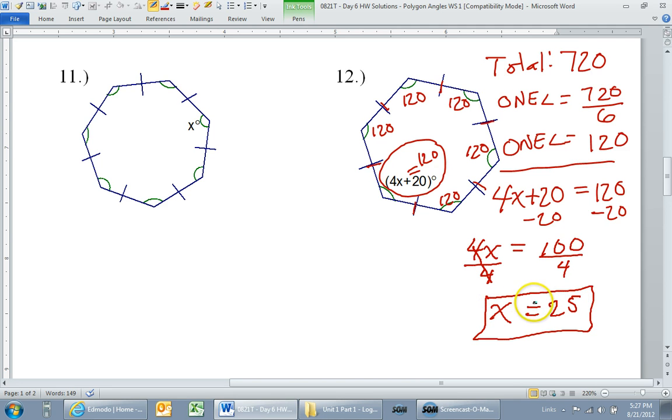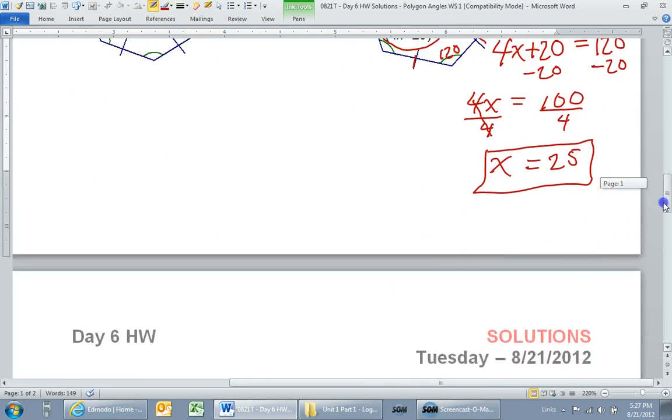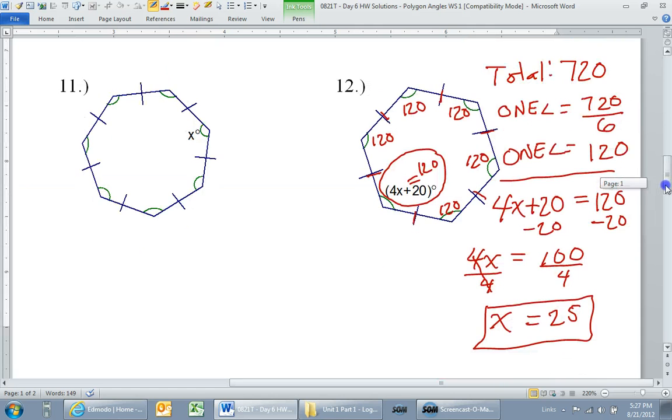Okay, that's how you do number 12. And number 11 is basically the same thing. So with those two examples, you should now be able to do number 7 through 12 with no problem.